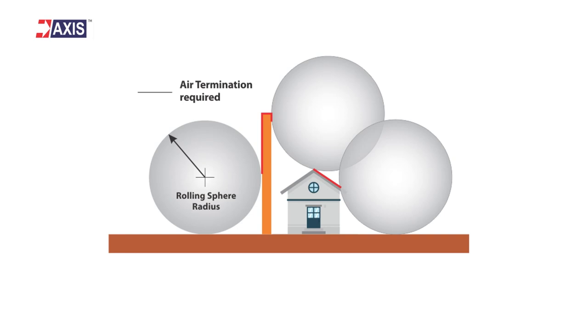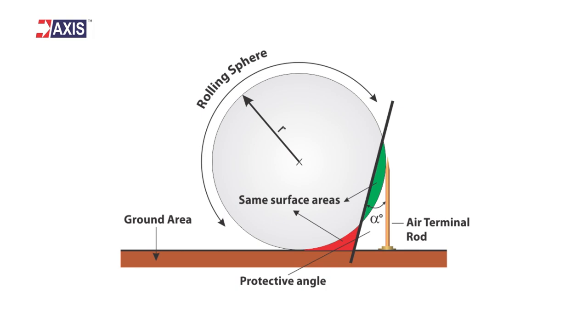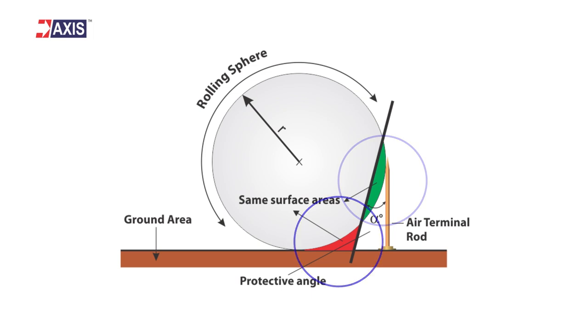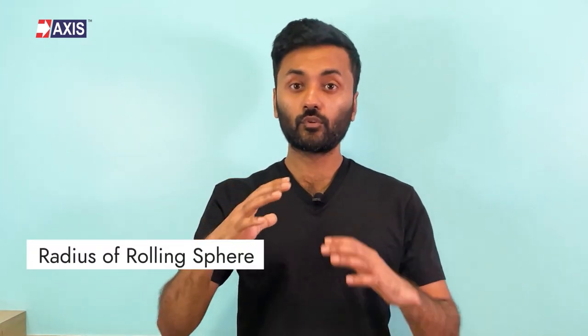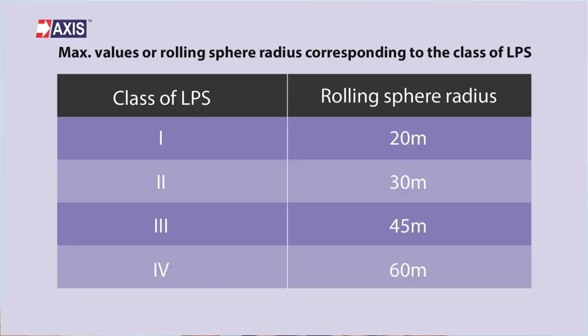This method is commonly referred to as a mathematical simplification of the rolling sphere method. The protective angle is determined in such a way that when the slope intersects the rolling sphere, the additional area under the protective angle marked green in this figure and the area that is now under the protective angle marked red are equal. The protective angle method is best used on simple structures, and it is valid only up to heights equal to the radius of the rolling sphere as defined by the class of lightning protection system for that structure.